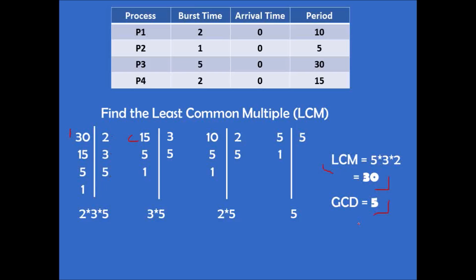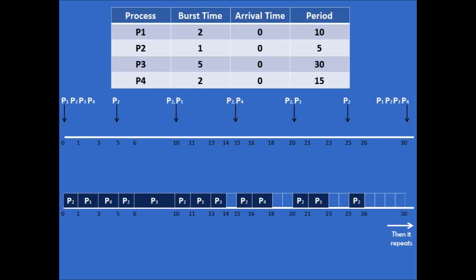The GCD, or Greatest Common Divisor, is 5, which uses the common factors with the smallest exponent. This number will be useful a little later. Now we apply the algorithm. With LCM equal to 30 and GCD equal to 5, we need to find the execution of processes up to the 30th time unit, from 0 to 30. After this period, the same order repeats from 30 to 60, and so on. I recommend drawing first the moments when each process needs to be executed. The process with a period of 5, which is P2, runs every 5 time units — it repeats the most, as the GCD tells us.